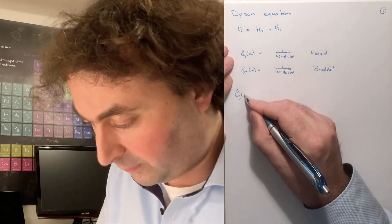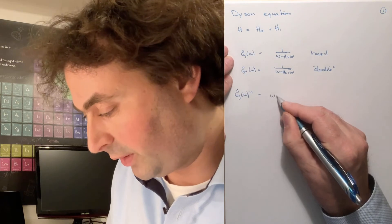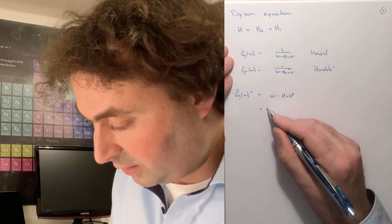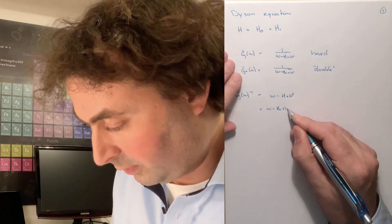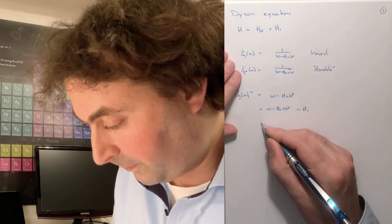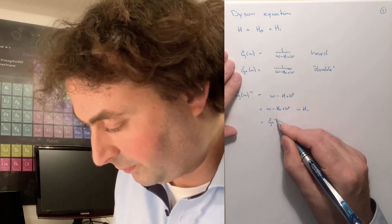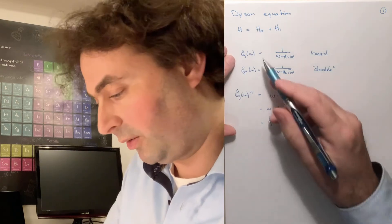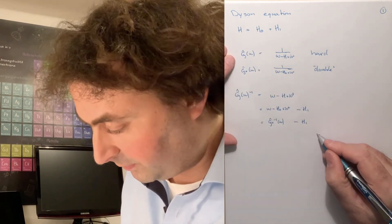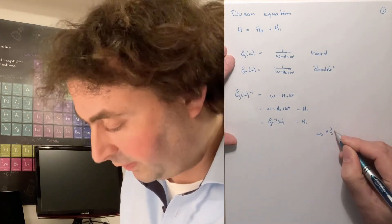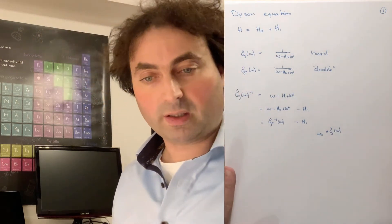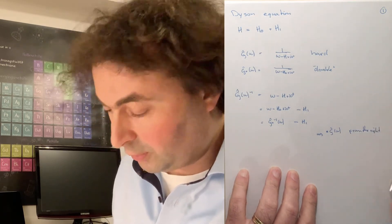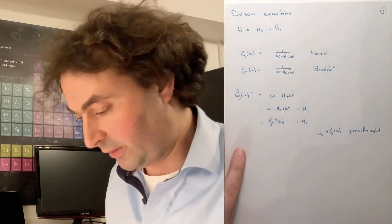Our Green's operator inverted is given as omega minus the Hamiltonian plus a small imaginary part, which is equal to omega minus H0 plus your small imaginary part minus H1, which is nothing else than G0 inverse minus H1. In order to come back to our Green's operators instead of inverses, we're going to multiply with the Green's operator. These operators don't commute, so we're going to multiply from the right — you can equally well multiply from the left and get similar equations.